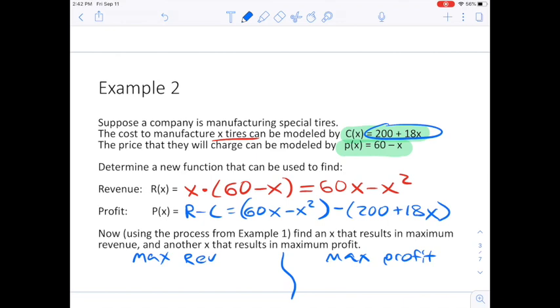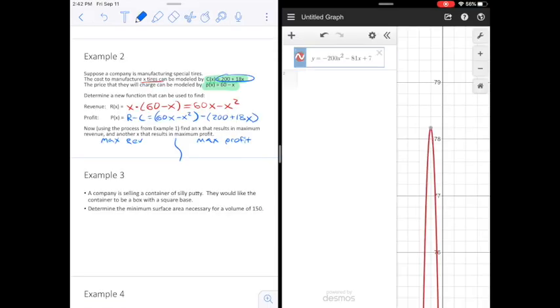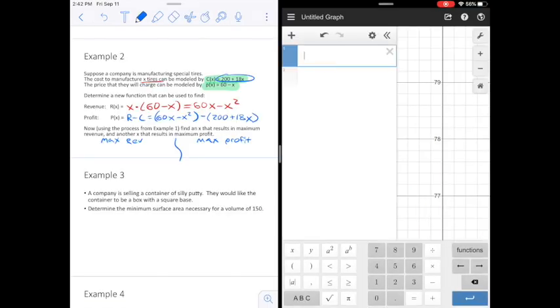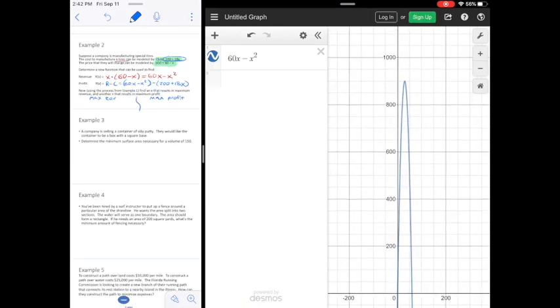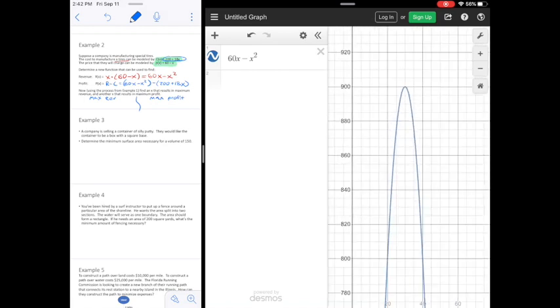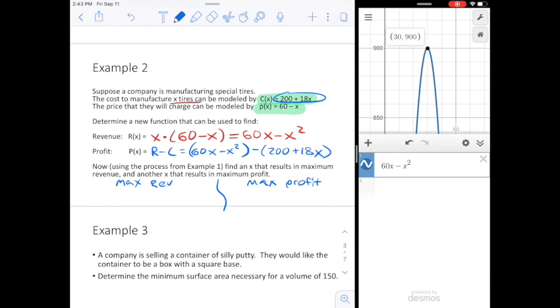So if I want max revenue, I'm going to go and type the revenue function into my graphing calculator. So there we have 60x minus x squared in our graphing calculator, and if I scroll around I find the vertex right here at 30, 900.